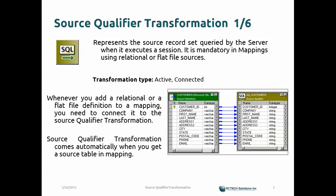The Source Qualifier represents the source record set queried by the server when it executes a session. It is mandatory in mappings using relational or flat file sources. Whenever you add a relational or flat file definition to a mapping, you need to connect it to the Source Qualifier Transformation — it's the active transformation that helps alter or massage the data, identifies where the data flow should go, and allows you to apply filters, join multiple tables, and all kinds of customization.